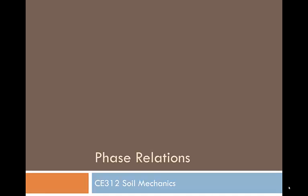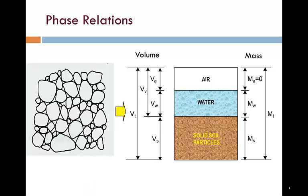This section is called phase relations. We learned in the previous section from the diagram on the left that soil is made up of solid particles with water and/or air in the voids. In order to define some useful quantities we use a phase diagram as shown on the right. We conveniently separate all the air, water and solid soil particles into their own blocks. The volume terms are shown on the left and the mass terms are shown on the right.